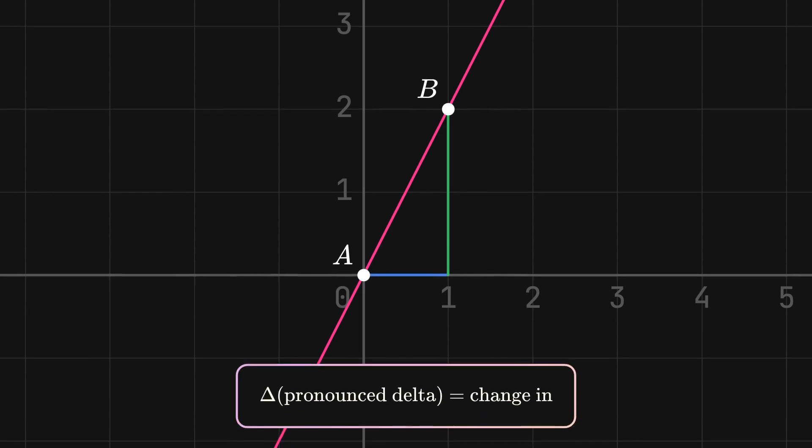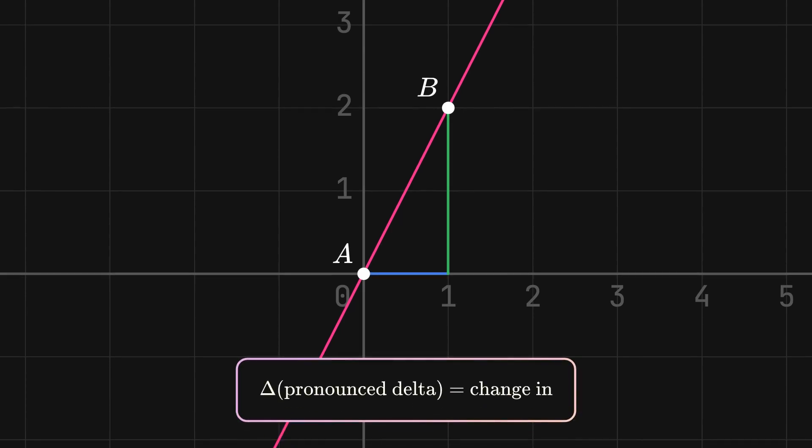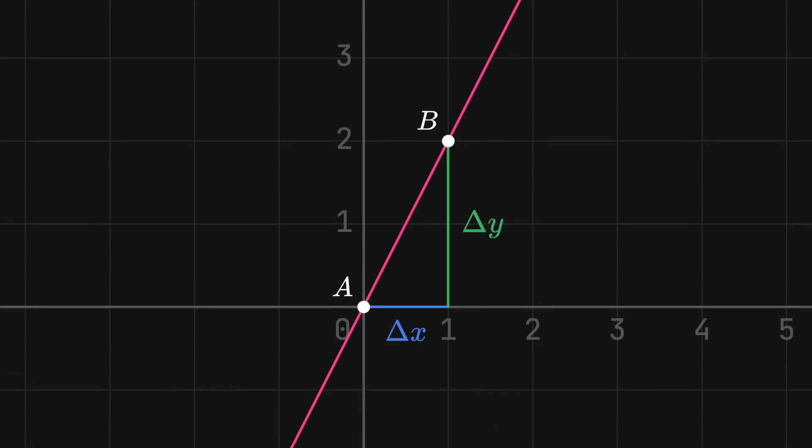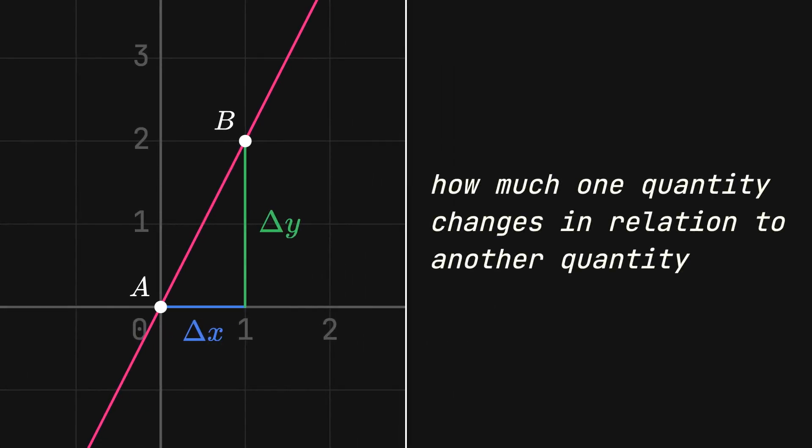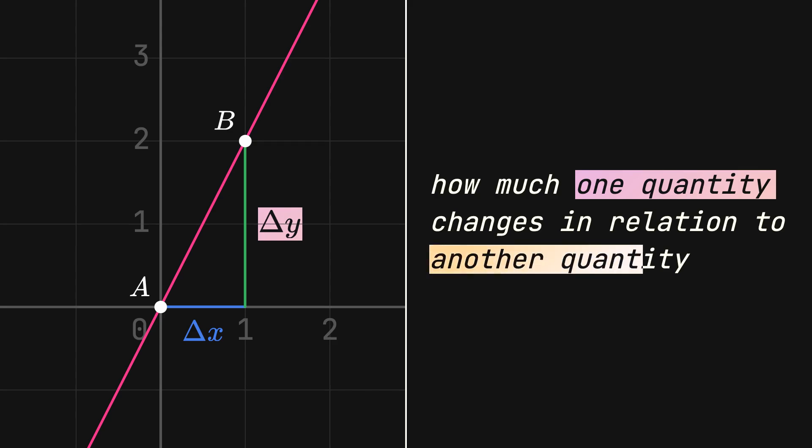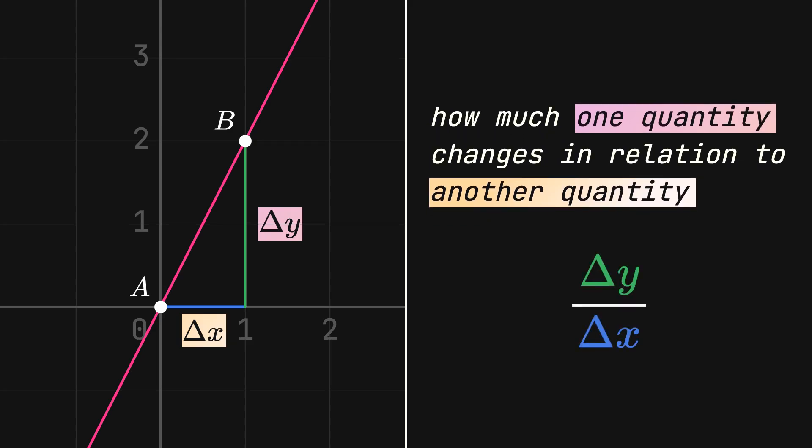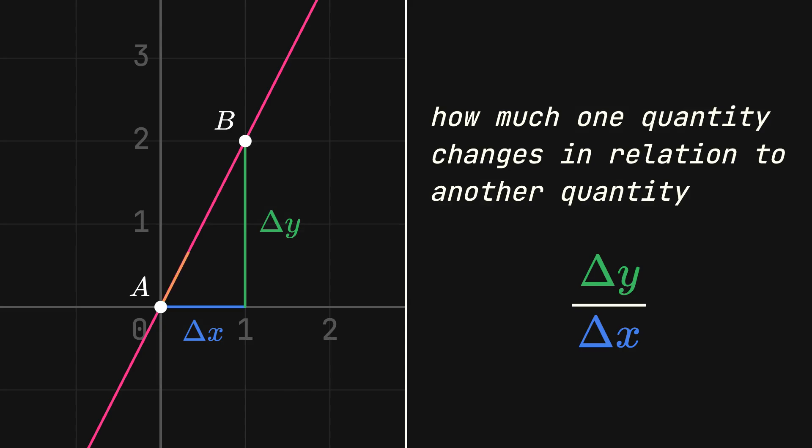Delta just means a change in something and is represented with a triangle. It's why we've labeled our distances as delta x and delta y. Regarding the earlier definition of average rate of change, the rate of change is going to be how much y changes in relation to x. It's calculated as delta y over delta x and is represented by the slope of the orange line.